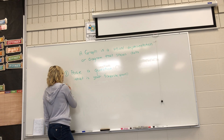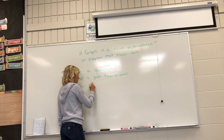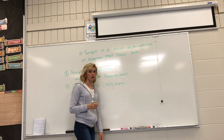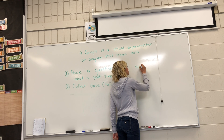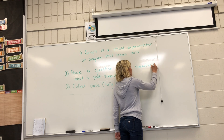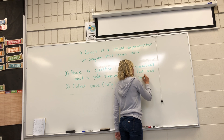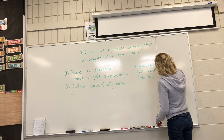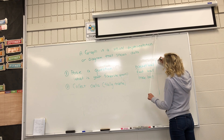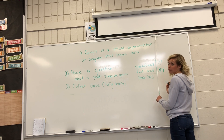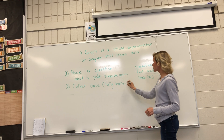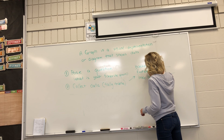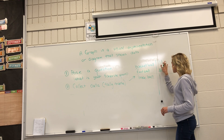Number two, I need to collect my data, which means I'm going to use my tally marks. So let's do basketball, football, and baseball — those are my three options. I'm going to go to my family. Three people liked basketball, five people liked football, and only one person liked baseball. So this is collecting the data.